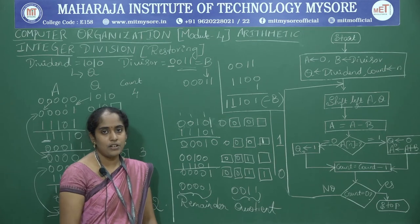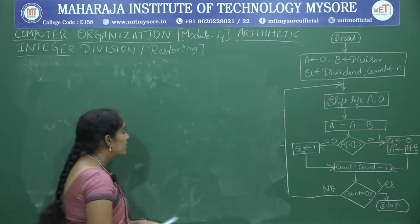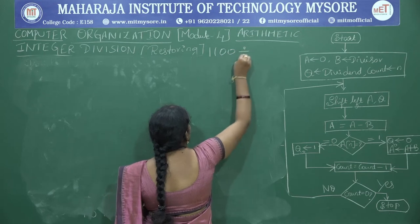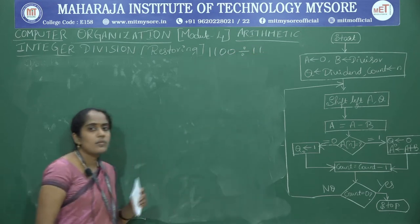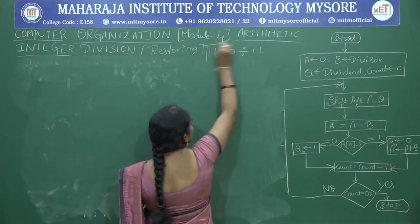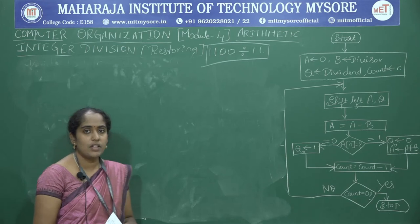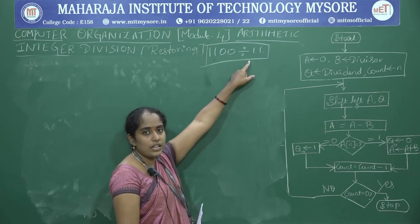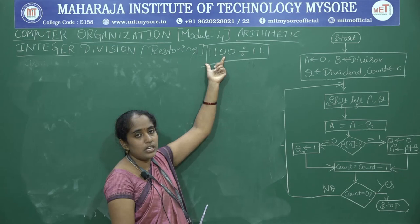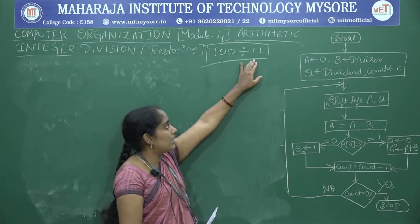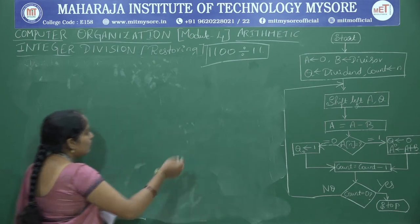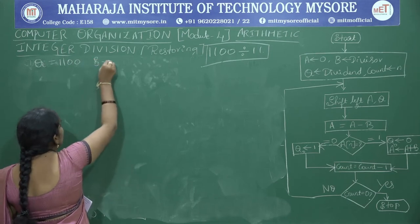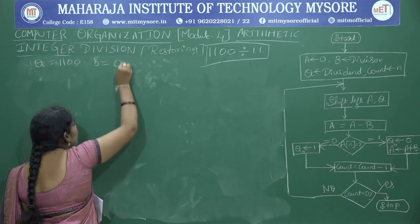Let's take the second example: 1100 divided by 11. The dividend contains 4 bits and the divisor contains only 2 bits. Since the divisor bit depends on the dividend value, we extend the divisor to 4 bits. Q equals 1100. B equals 0011.